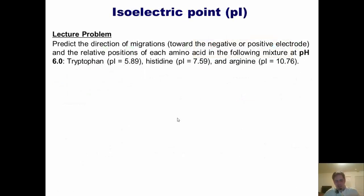So now I arrive at a lecture example. I want you to predict the directions of migration toward the negative or positive electrode and the relative positions of each amino acid in the following mixture at pH 6. That's tryptophan, histidine, and arginine with their isoelectric values given. If you want, you can pause it at this stage, but of course you know that I am going to give you all the answers.